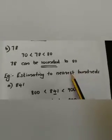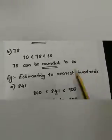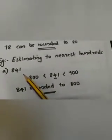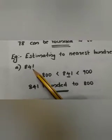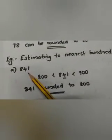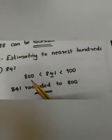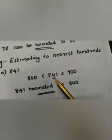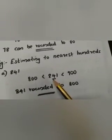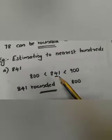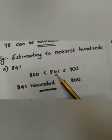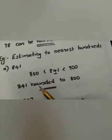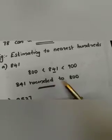Next, we can estimate by rounding to the nearest hundreds. First example: 841. Find out between which two hundreds 841 lies — it lies between 800 and 900. For rounding to nearest hundreds, we are checking the digit in the tens place. Here in the tens place the digit is 4. So if 4 comes, we are rounding downwards. So 841 is rounded to 800.